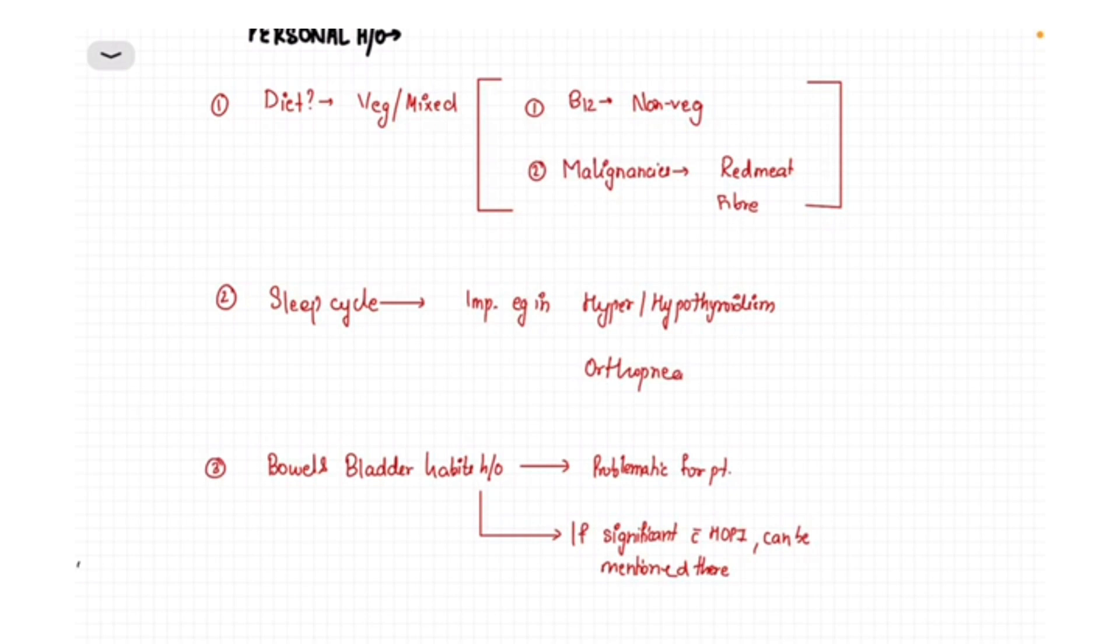Similarly in case of malignancies, different diets can be risk factors for different malignancies. So you can take a detailed history if you suspect such in the HOPI. The second is the sleep cycle.